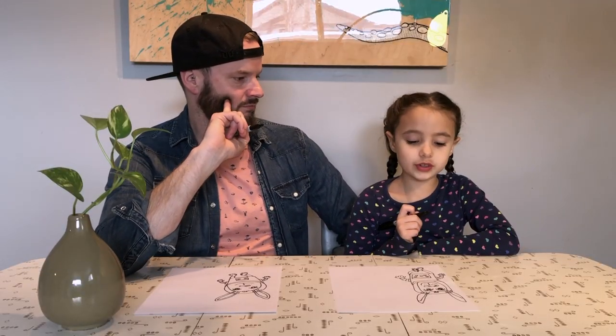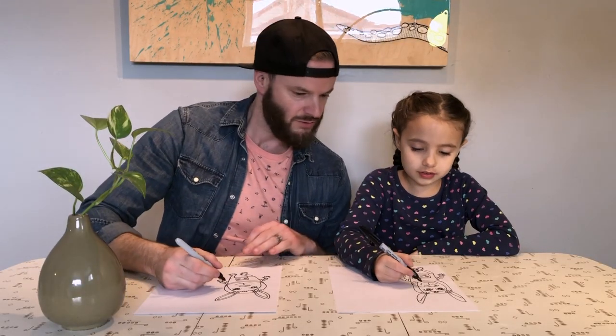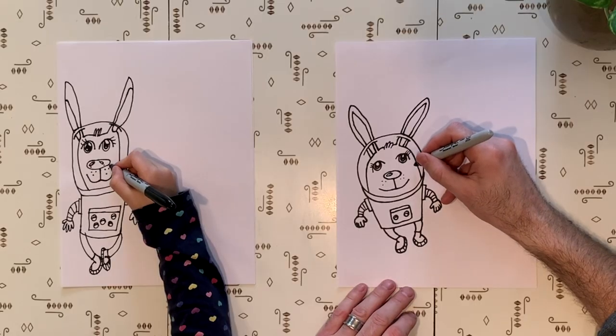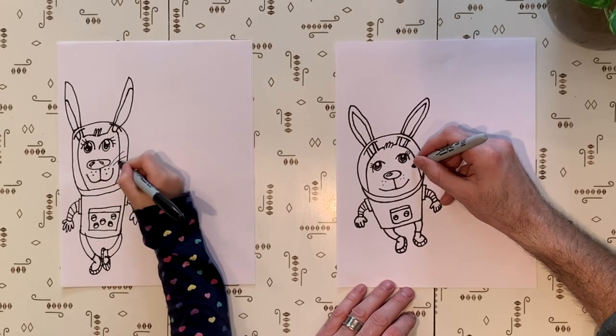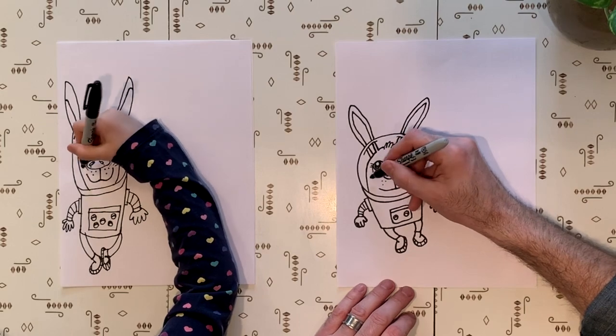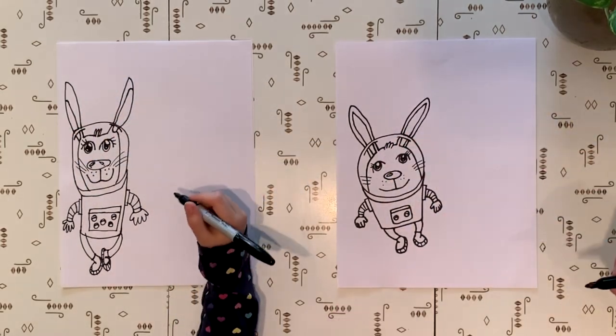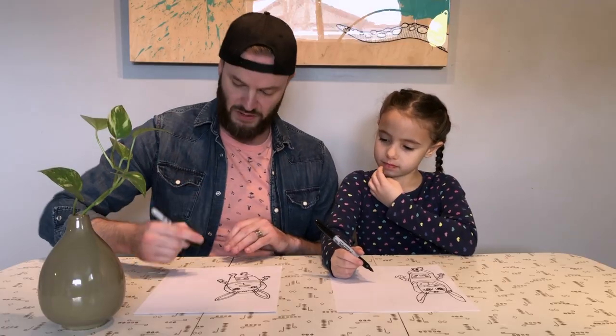Now, every bunny has what on its cheeks? Whiskers. Whiskers. So let's do it. Three. Excellent. That is our space bunny.